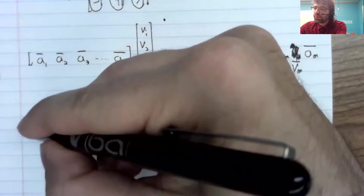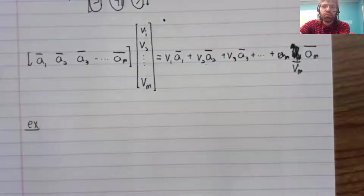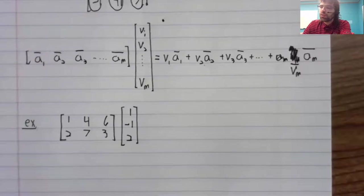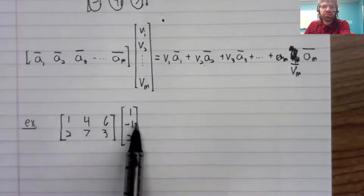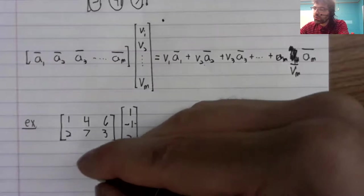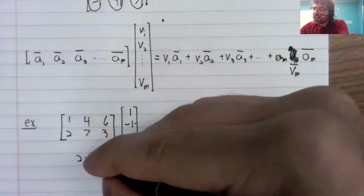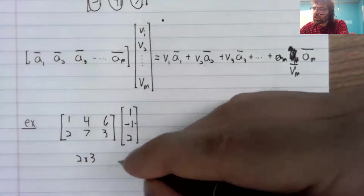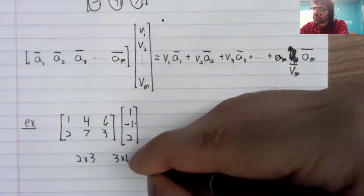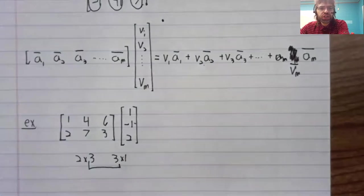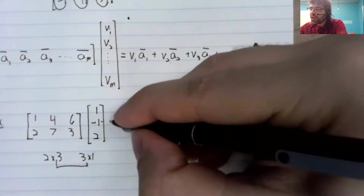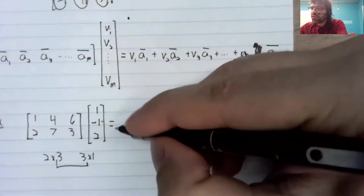So for example, this matrix times this vector. We can do the multiplication. Because these dimensions match.